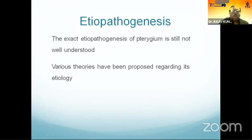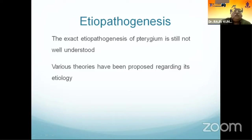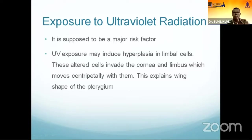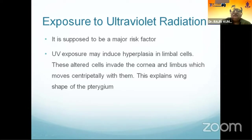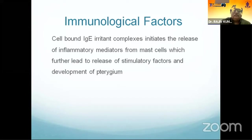The exact aetiopathogenesis of pterygium is still not fully understood. However, various theories have been proposed. The most common aetiological factor is exposure to ultraviolet radiation, which is considered a major risk factor. UV exposure may induce hyperplasia in limbal cells; these altered cells invade the cornea and limbus and move centripetally, explaining the wing shape of pterygium. Immunologically, cell-bound IgE–irritant complexes initiate release of inflammatory mediators from mast cells, leading to stimulatory factors and pterygium development.